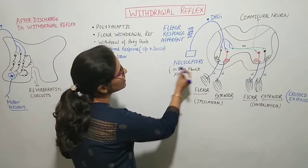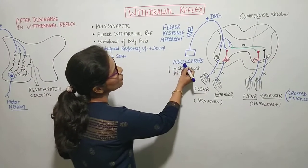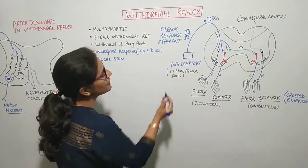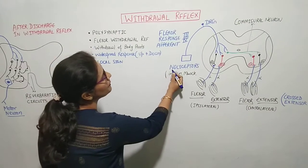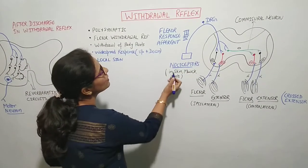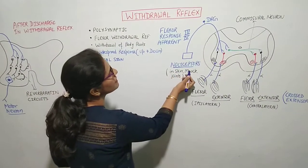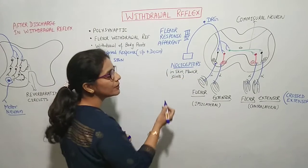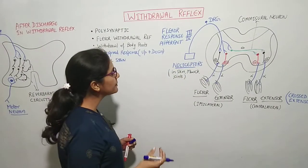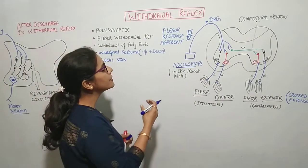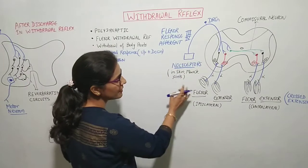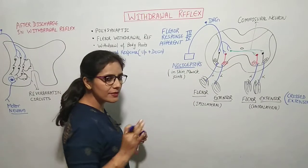The stimulus for this reflex comes from nociceptors — the pain receptors are called nociceptors. They are found in the skin, in the muscles, in the joints, and in the subcutaneous tissue. Wherever pain fibers are present, pain receptors can be found.